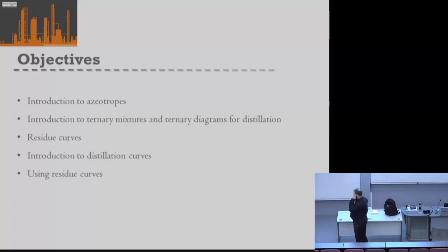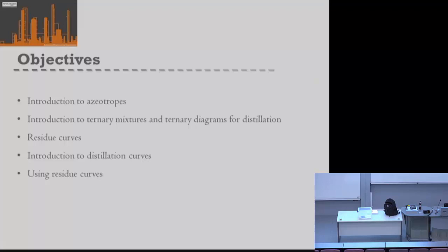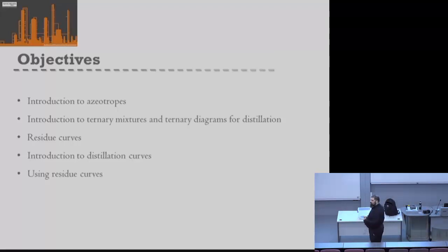So today, what I want to go through is essentially a little reminder to refresh your memory about what azeotropes are and how they can form. Then we'll look at ternary diagrams and see how we can start representing azeotropic systems for three components. And then we'll move on to residue curves and distillation curves, and see how we can use these things to look at what's happening in our distillation columns and what separations we can make.